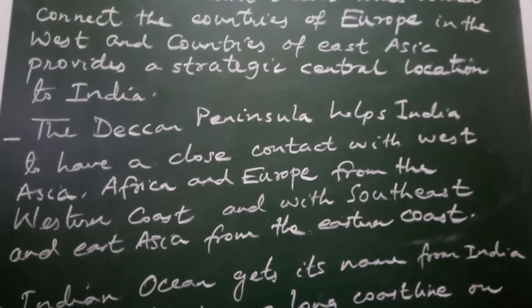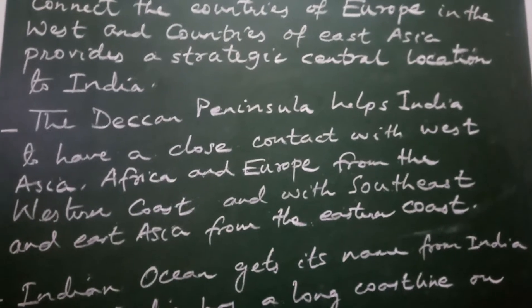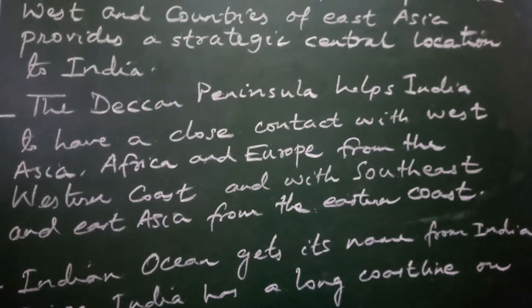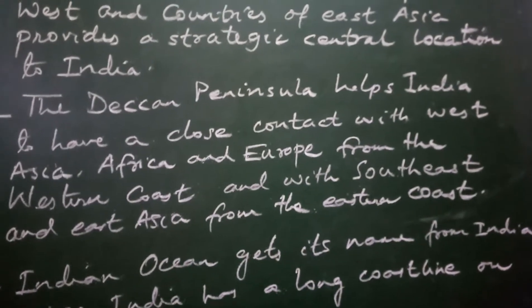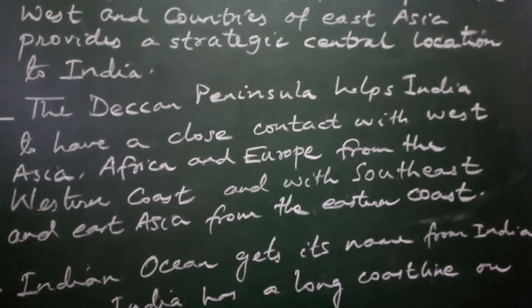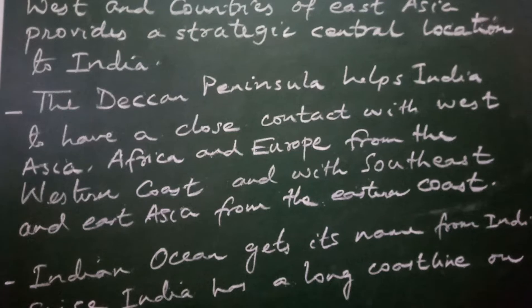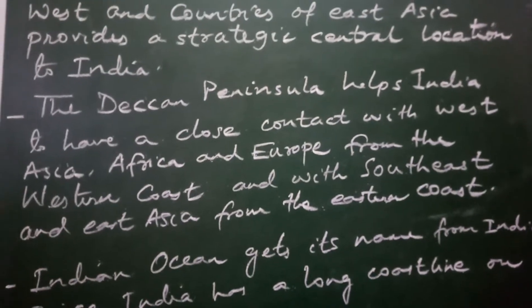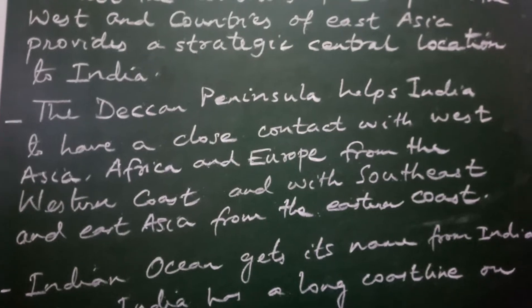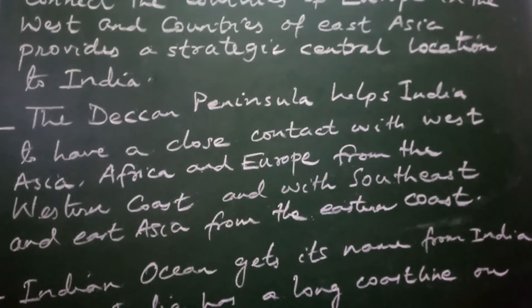We have the Deccan Peninsula, which helps India have close contact with West Asia, Africa, and Europe from the Western coast, and with South East and East Asia from the Eastern coast. This means India has contact with Asia, Africa, and Europe from the west and South Asia and East Asia from the east.